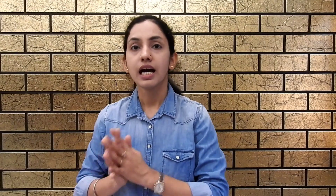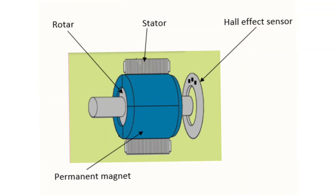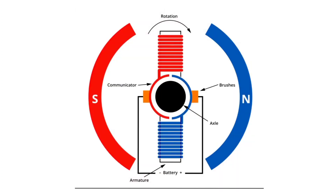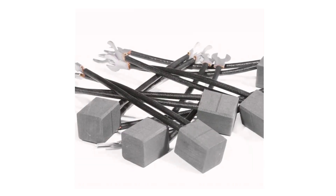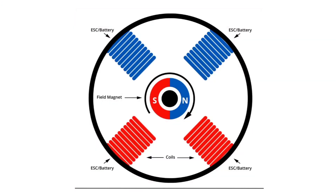A brushless DC motor, also known as a synchronous DC motor, unlike the brushed type, does not have a commutator. Instead, the commutator is replaced by an electronic servo mechanism that detects and adjusts the angle of the rotor. A brushed DC motor features a commutator that reverses the current every half cycle, creating single-direction torque. While brushed DC motors remain popular, many have been phased out in favor of more efficient brushless models in recent years.